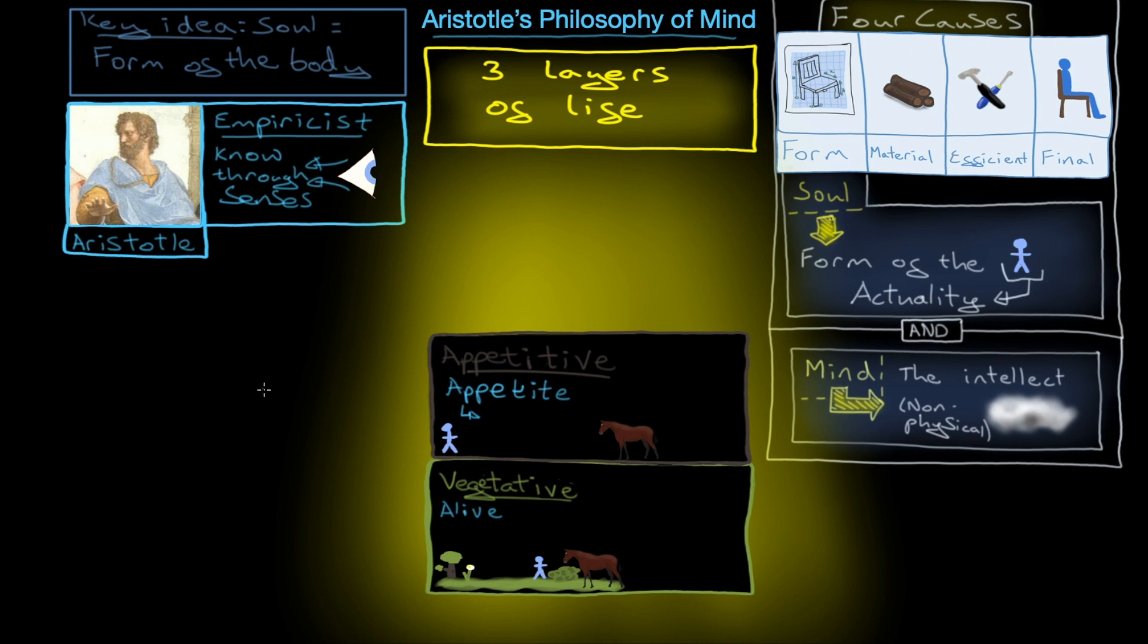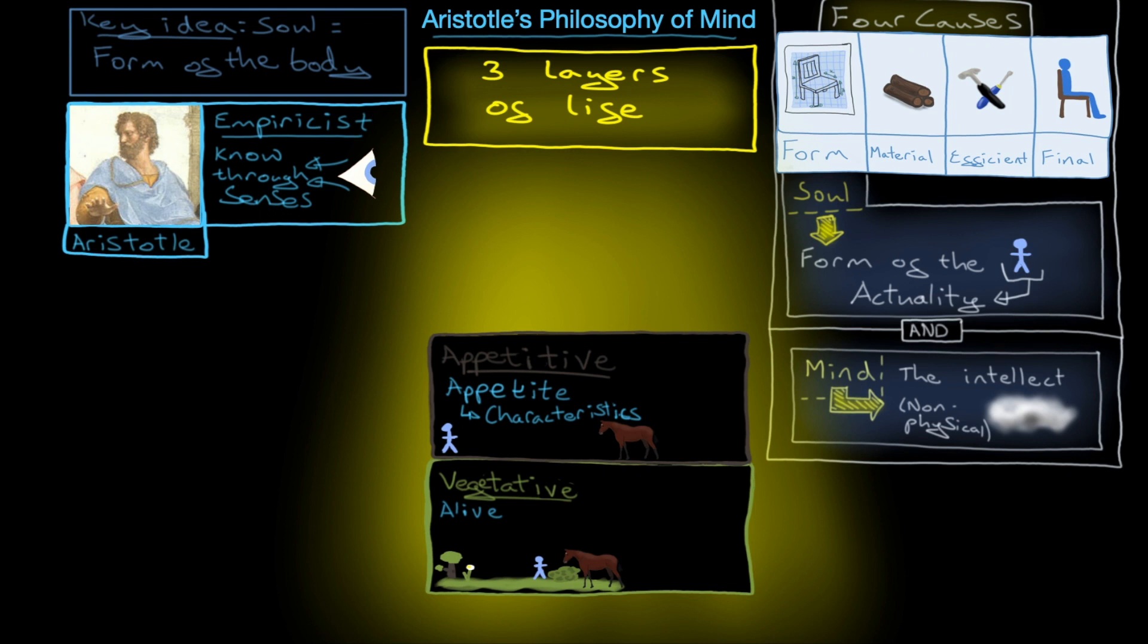This is where your characteristics come in. Aristotle, being an empiricist, doesn't really see plants as having characteristics, but animals do have characteristics. Then we have this third and final layer, which is the level of the mind. The mind is this kind of universal intelligence - essentially just the application of logic.